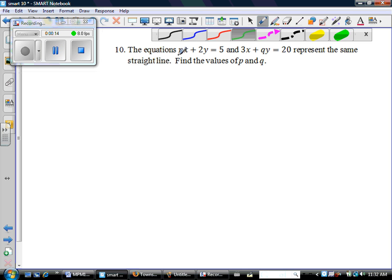The question says that the equations px + 2y = 5 and 3x + qy = 20 represent the same straight line. Find p and q.